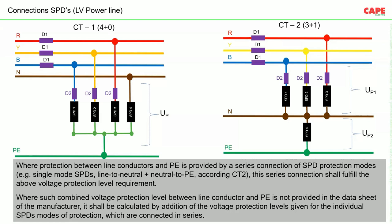A manufacturer should mention a combined voltage protection level in their datasheet. If not, it should be calculated by adding the voltage protection levels of the individual SPD modes connected in series — that is, voltage drop across SPD1/2/3 plus voltage drop across SPD4, along with the voltage drop across the connecting wires.